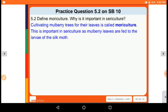Next, define the mori culture. Why is it important in sericulture? Cultivating the mulberry trees for their leaves is called mori culture. This is important in sericulture as the mulberry leaves are fed to the larvae of the silk moth.